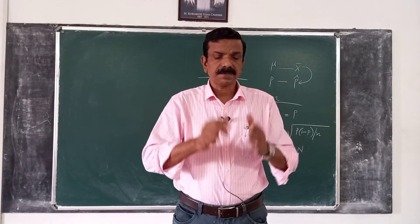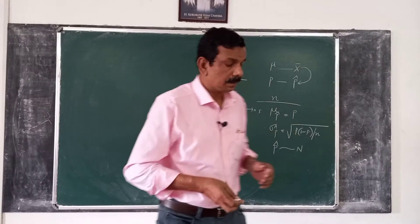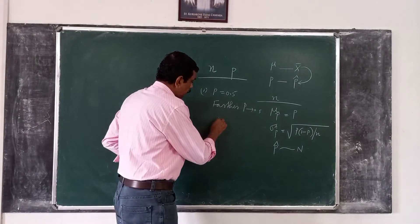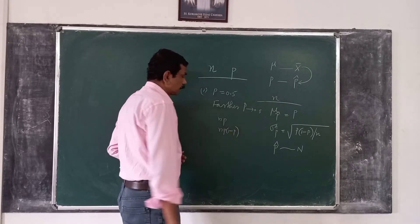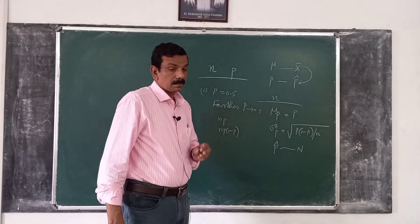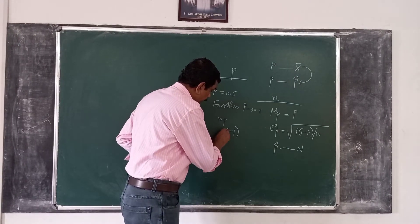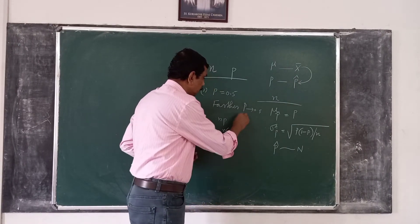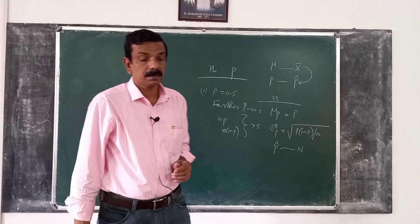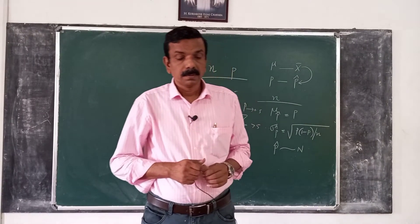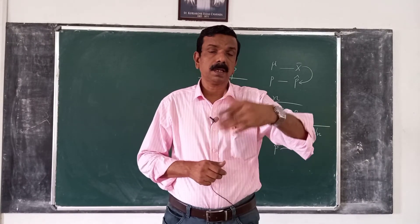As a rule of thumb, the approximation is accurate when both n times p and n times (1 minus p) are greater than 5.